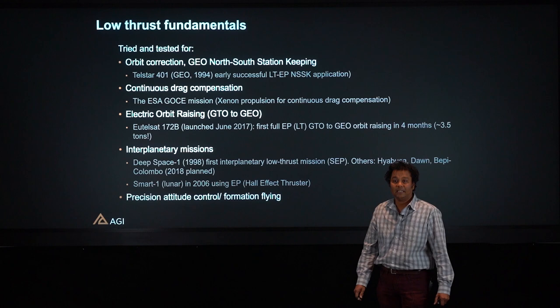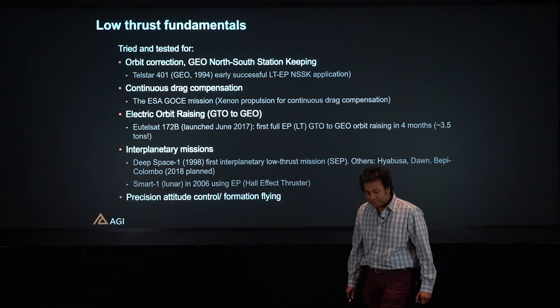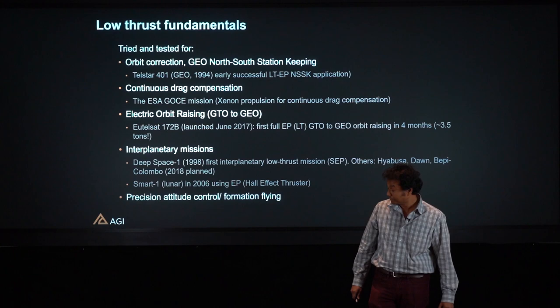The SMART-1 lunar mission, which took place in 2006, also used full Low-Thrust. Another application of Low-Thrust propulsion systems is precision attitude control, which we are not concerned with in this presentation.